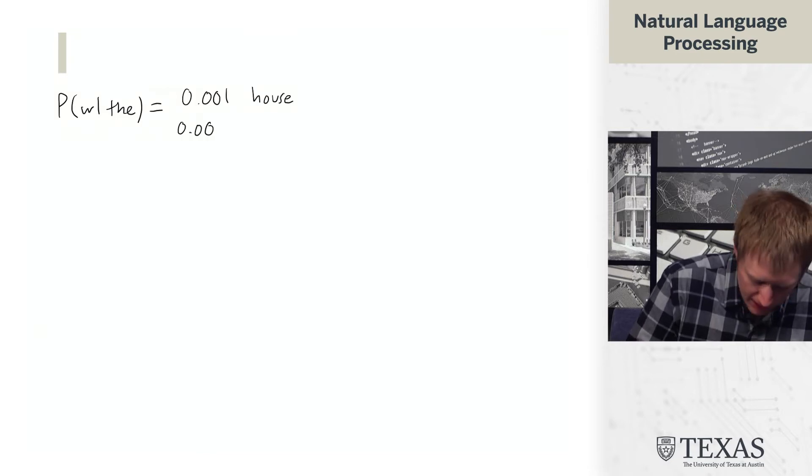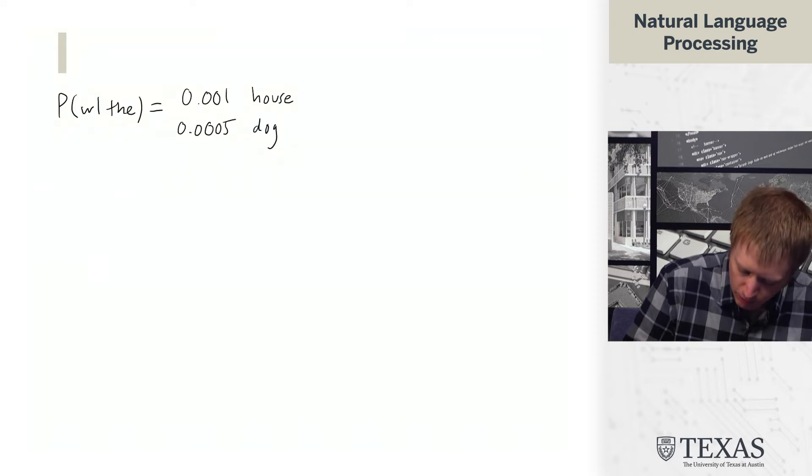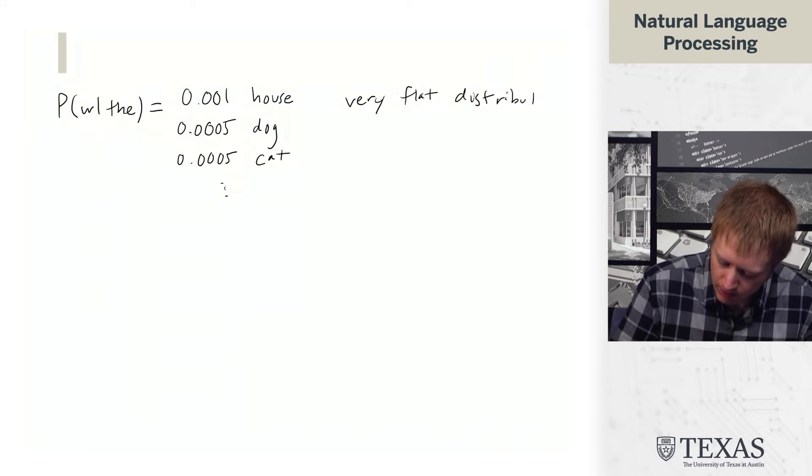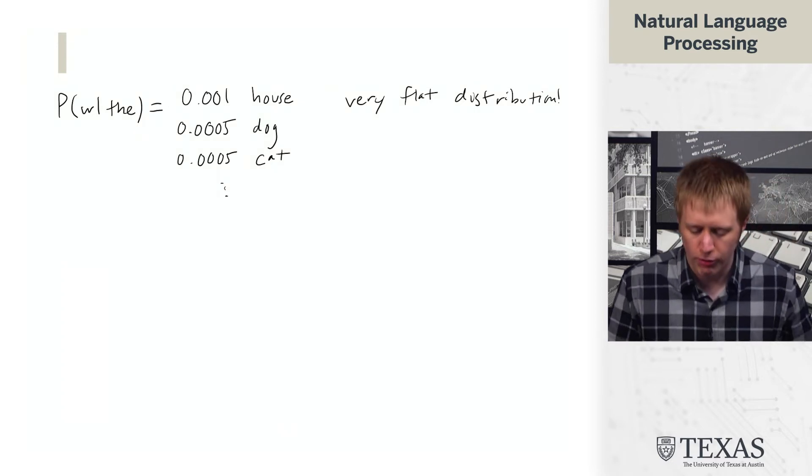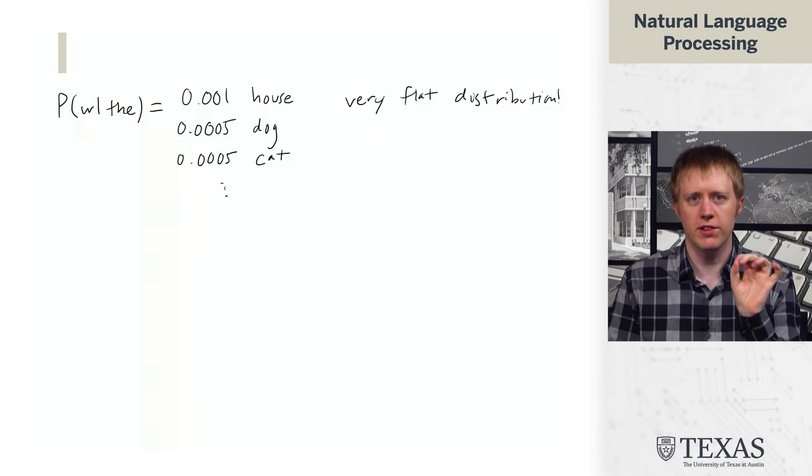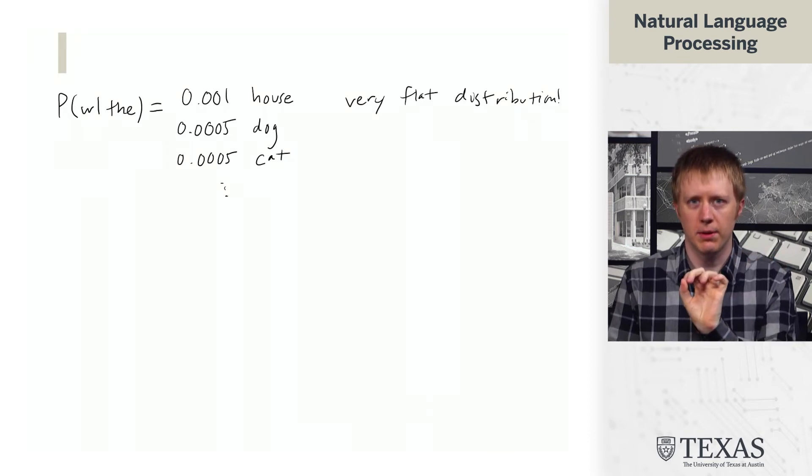The parameters look like a table of probabilities for each possible word that can follow a context word. So for example, if we look at what words come after the, we're generally going to end up with some very flat distribution over the following words. Because if we only see the word the, we have no idea what's coming up next.